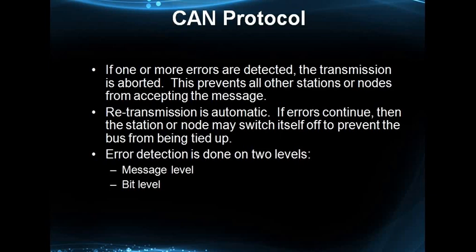On receiving the error frame, all other nodes will also send an error frame. Once the error is detected and the error frame is sent on the bus, there is a possibility of retransmitting the lost messages. If the error continues, then the station or node may switch itself off to prevent the bus from being tied up. This is related to CAN bus fault confinement.